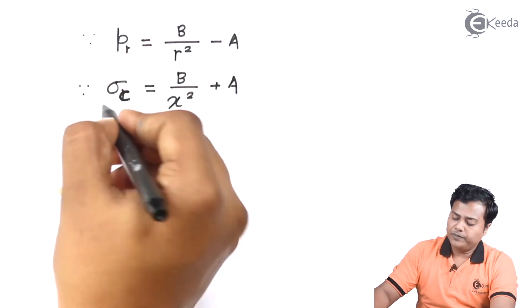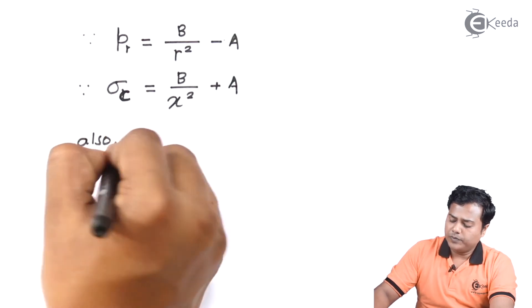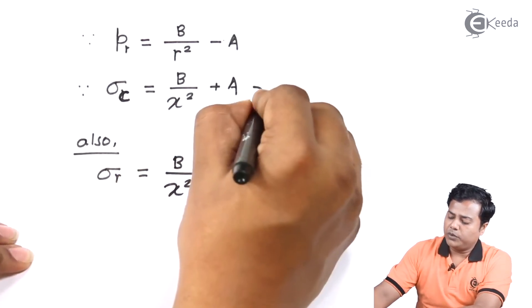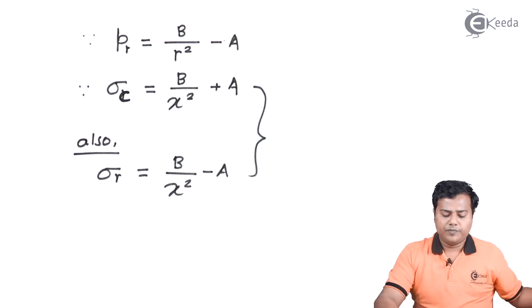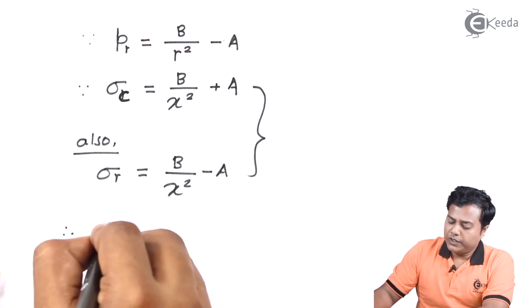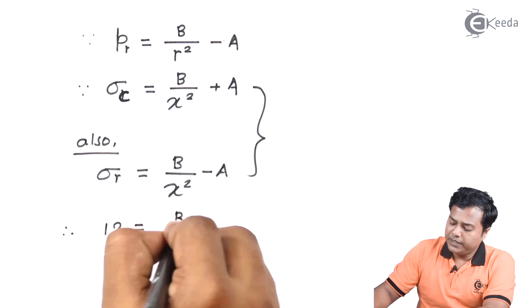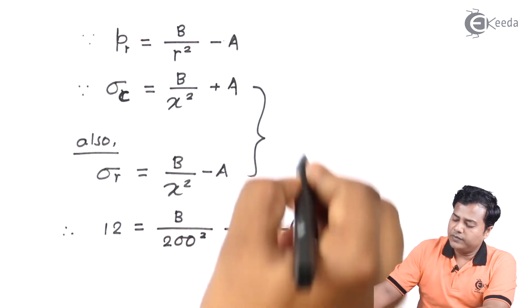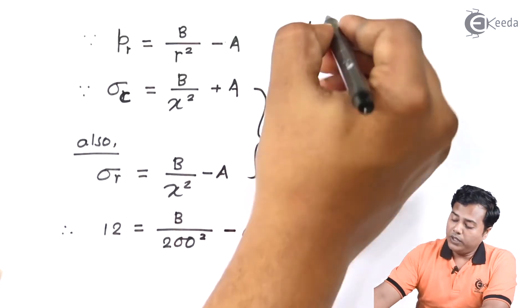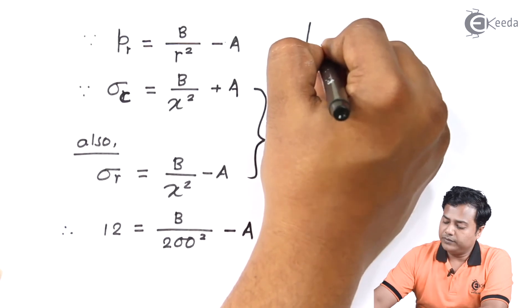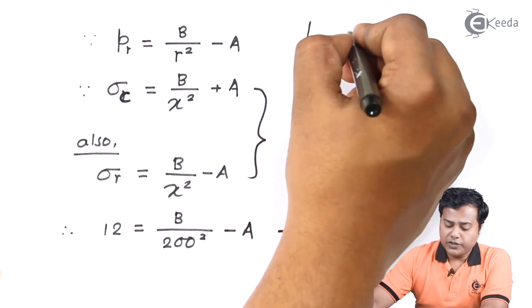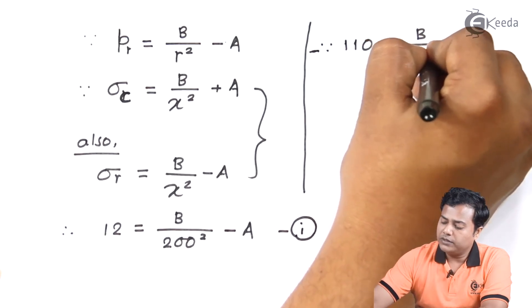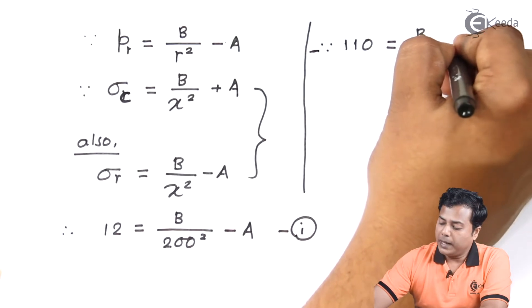Circumferential stress, I am really sorry, also the radial stress is given by B upon x square minus A. So these are prominently the Lemmy's equations we have. And therefore to substitute values: 12 is equal to B divided by 200 square minus A, that's my expression number 1. What else I can define is we know that the circumferential stress which is 110 in our case is equal to B upon 200 square, which is the internal radius, plus A.